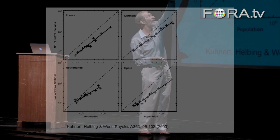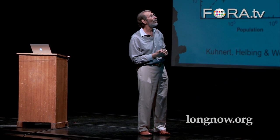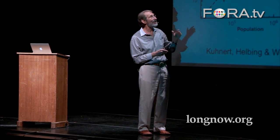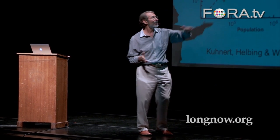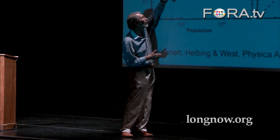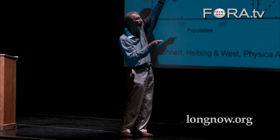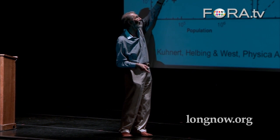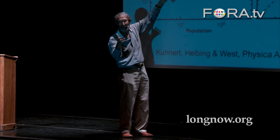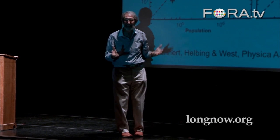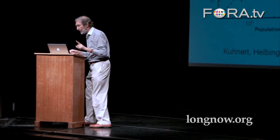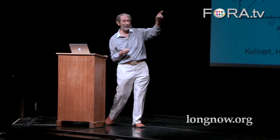In fact, the slope — the gradient of these lines — are all pretty much the same, and they're less than linear. A linear relationship would mean double the size of a city, double the number of gas stations. But no — there's an economy of scale. The bigger the city, you actually need less gas stations per capita in a systematic way across Europe.